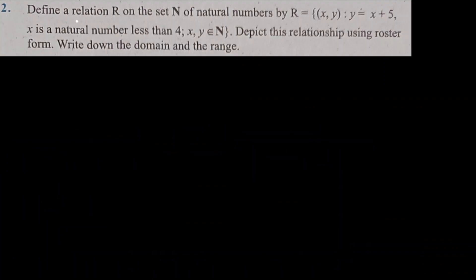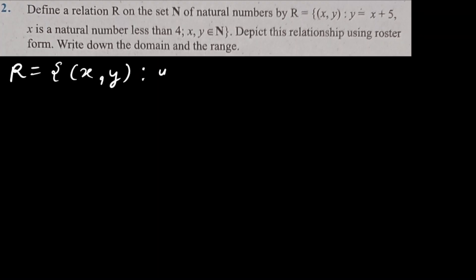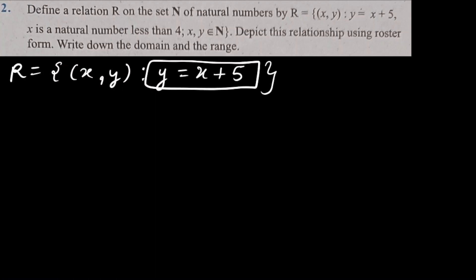Second question: define a relation R on the set N of natural numbers by R = {(x, y) such that y = x + 5}, where x is a natural number less than 4. Depict this relationship using roster form and write its domain and range.